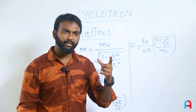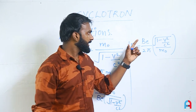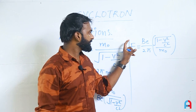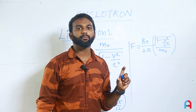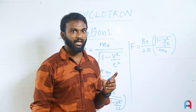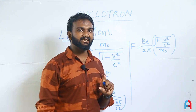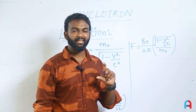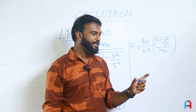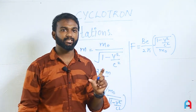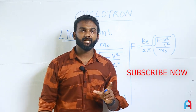To overcome this limitation, two solutions exist: first, vary the magnetic field (field variation) to compensate for the changing mass; second, use a frequency-modulated AC oscillator — adjust the AC frequency to match the changing time period of the particle. These modifications are used in synchrocyclotrons to extend the cyclotron's capability.